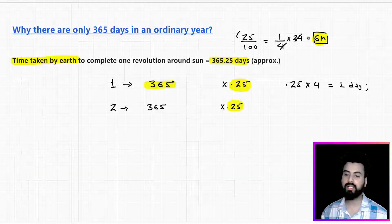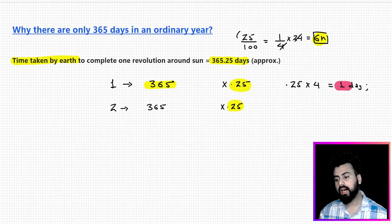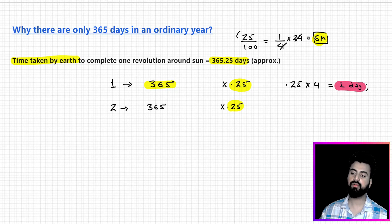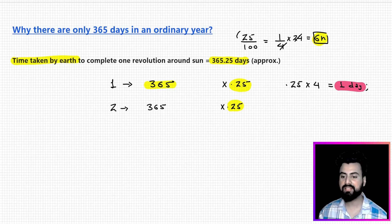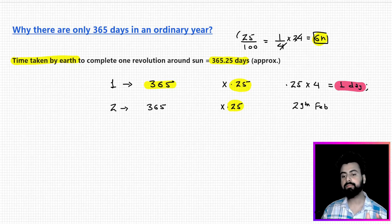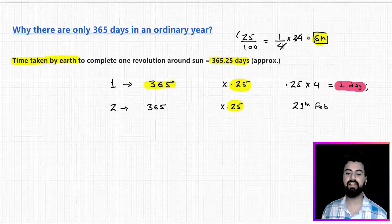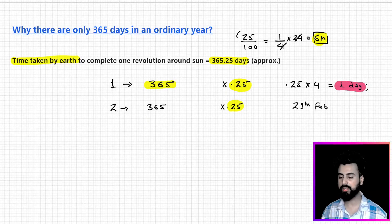If we keep throwing away 0.25 days for 4 years, it accumulates to 1 full day, and we cannot just throw out 1 day. Because of this reason, after every 4 years we add 1 extra day as 29th February, and that particular year is called a leap year. This is why a leap year repeats itself after every 4 years.